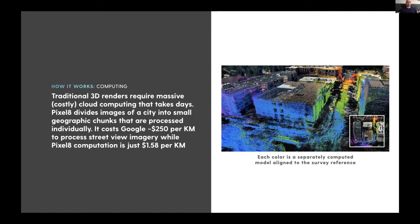That really drove down the cost — instead of hundreds of dollars per kilometer to process this data, we're down to $1.58 per kilometer. When somebody collects two and a half gigabytes of data over a kilometer, it costs us $1.58 to process that into a full-fidelity densified point cloud with a feature database. At that cost, we can start crowdsourcing, because if somebody gives us bad data or recollects something done five minutes ago, it's not going to break the bank.